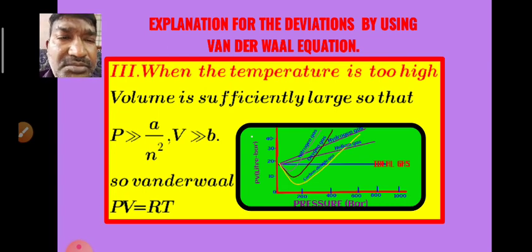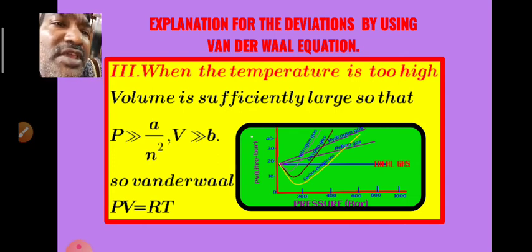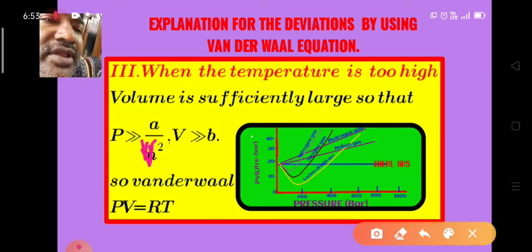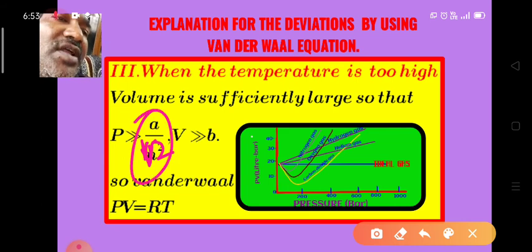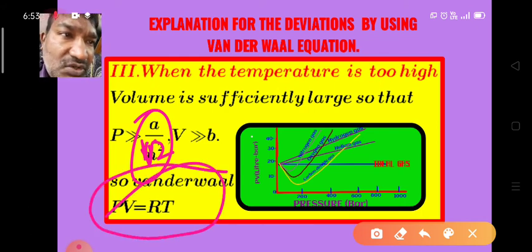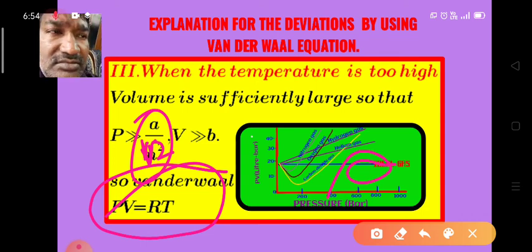In the third case, when the temperature is very high, the gas expands and volume increases. Compared to this large volume, both b and a/V² become negligible and can be removed from the Van der Waals equation. As a result, the Van der Waals equation reduces to the ideal gas equation PV = RT. So at high temperatures, gases show ideal behavior.